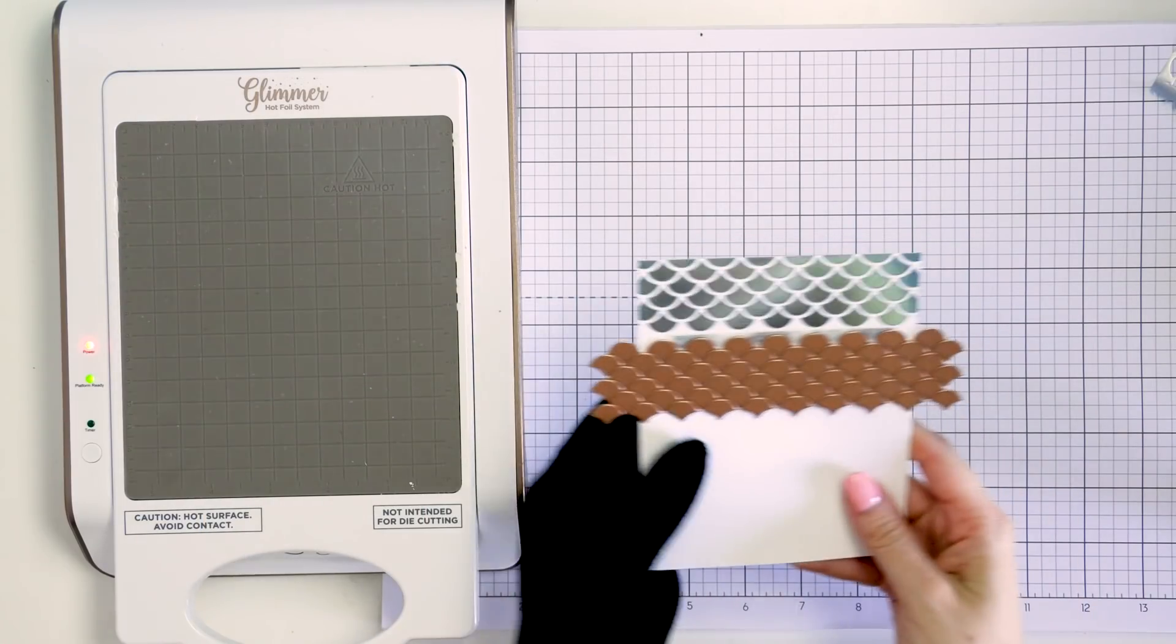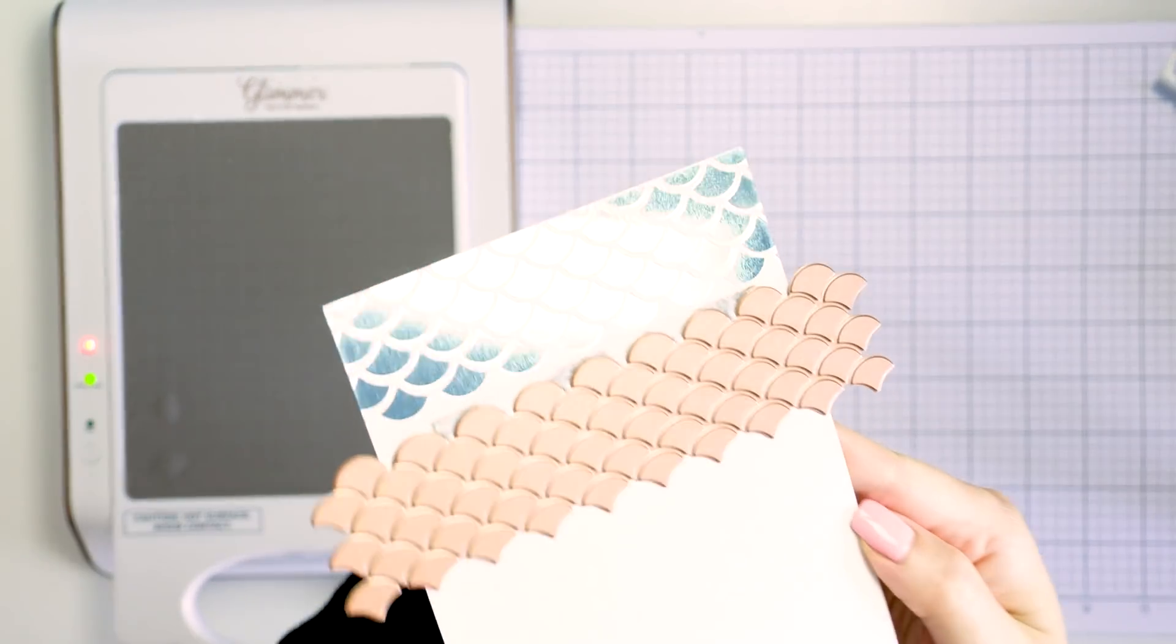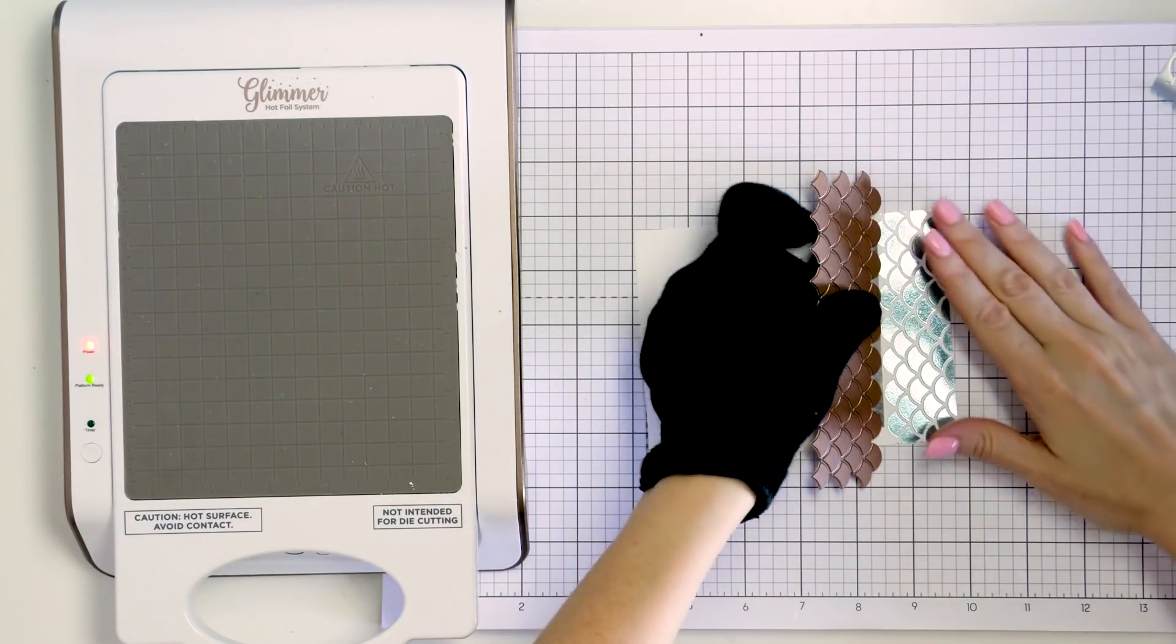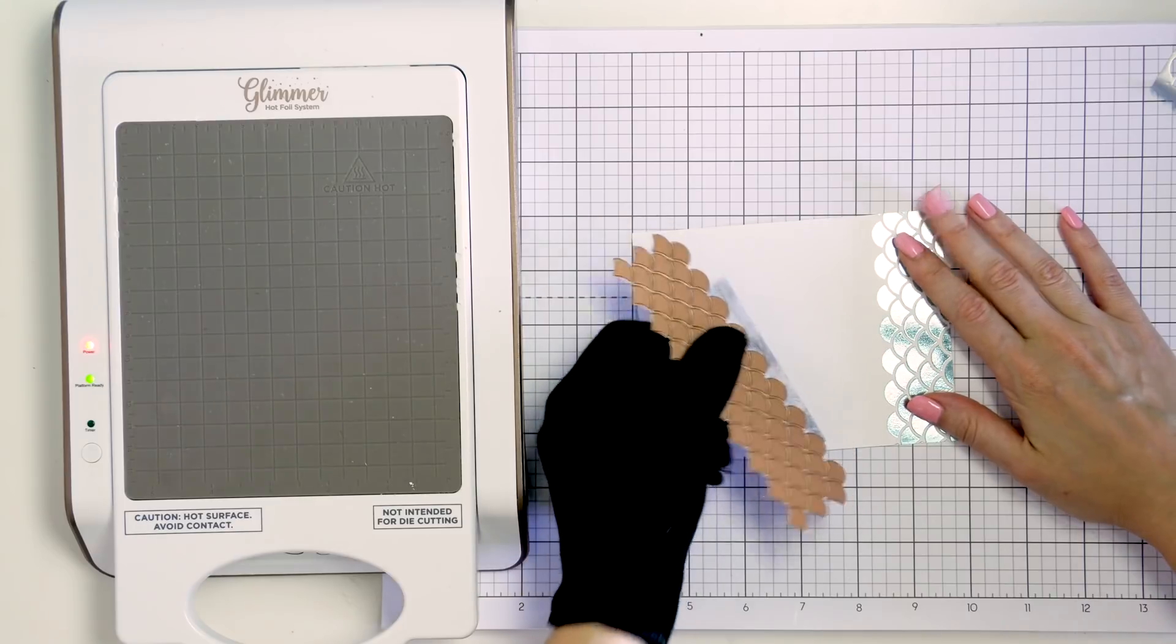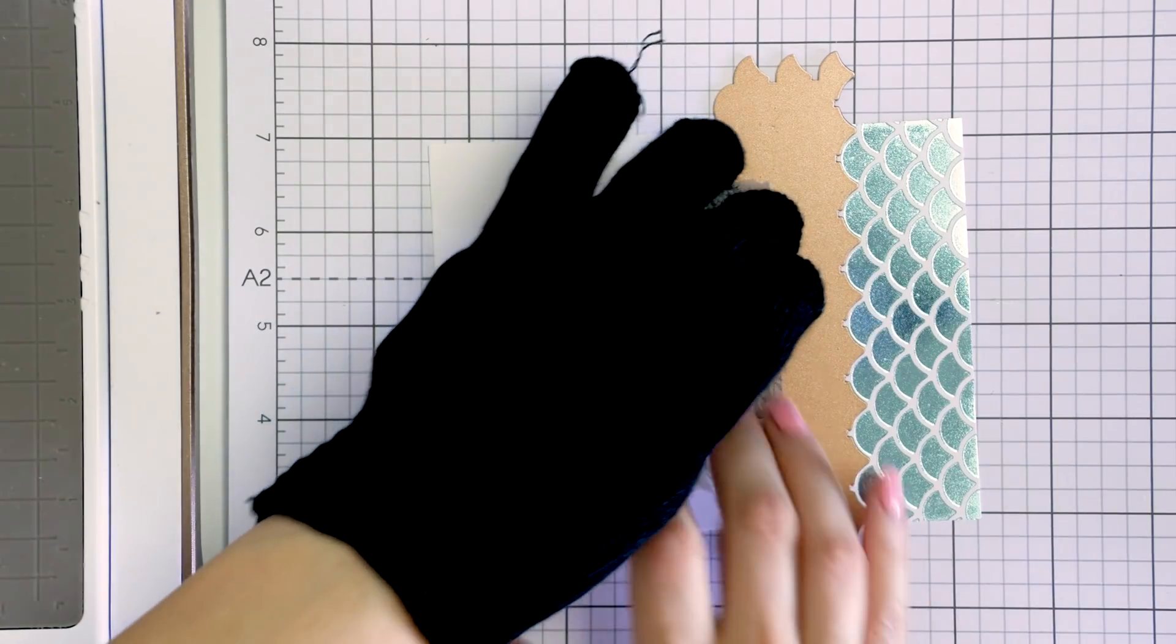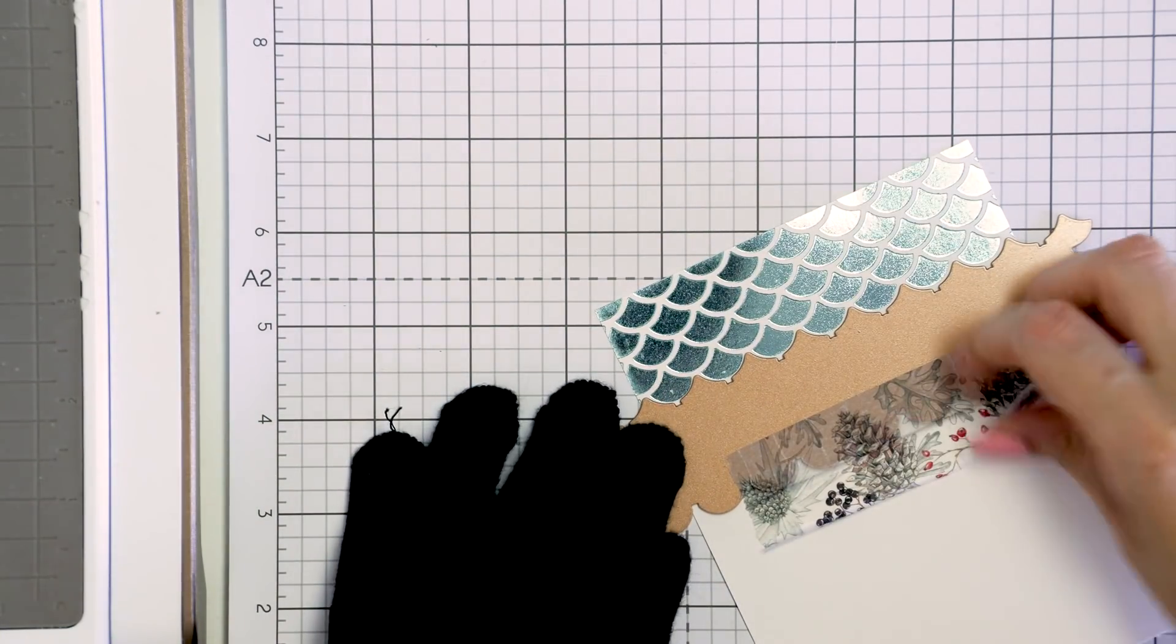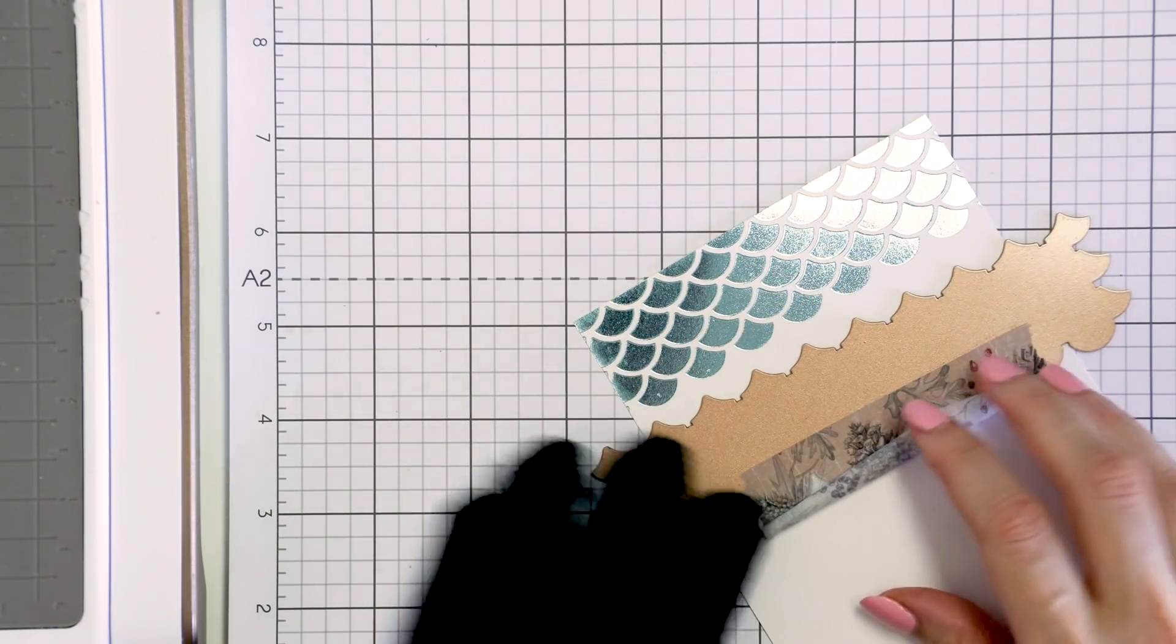Let's peel the foil first and look at this beauty. So pretty. I love this result. Holding the paper with my non-gloved hand I'm going to remove the glimmer plate with my gloved hand and reposition it on the paper aligning with a previously foiled design to have one continuous background on my card.